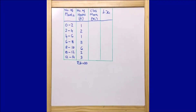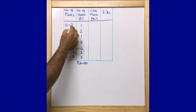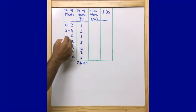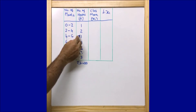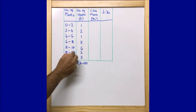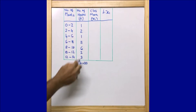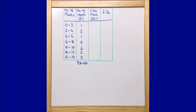As per the question, the data shows the number of plants per house: zero to two plants in one house, two to four plants in two houses, four to six plants in one house, six to eight plants in five houses, eight to ten plants in six houses, ten to twelve plants in two houses, and twelve to fourteen plants in three houses. Adding all frequencies gives us 20, confirming the survey covered 20 houses.